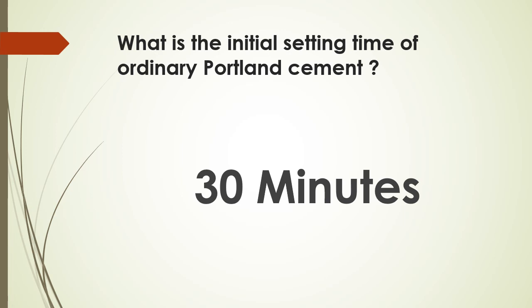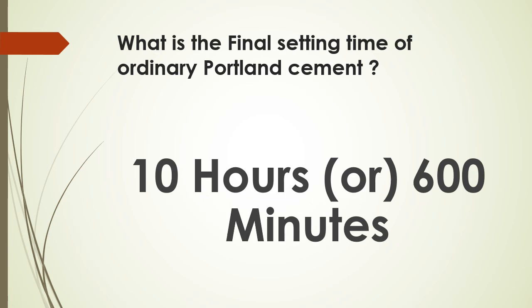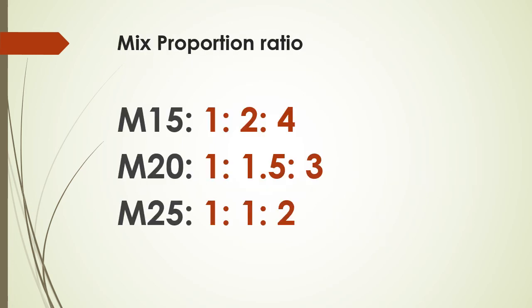What is the initial setting time of ordinary Portland cement? It is 30 minutes — the time taken for the cement to start setting from when water is mixed. After 30 minutes, the cement starts to harden. The final setting time of ordinary Portland cement is 10 hours or 600 minutes. After this, you cannot even scratch the cement.